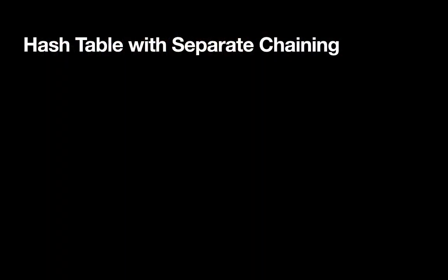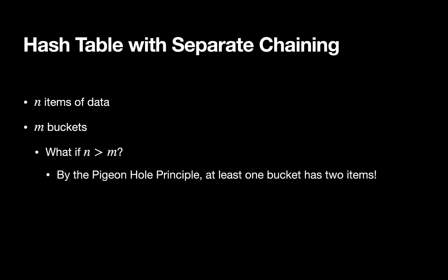In this table we had our hash table with separate chaining. We had n items in a total of m buckets. In our specific example we had eight items in just four buckets. So we had this case where n was greater than m. We've already talked about the pigeonhole principle. At least one bucket has to have multiple items in it.